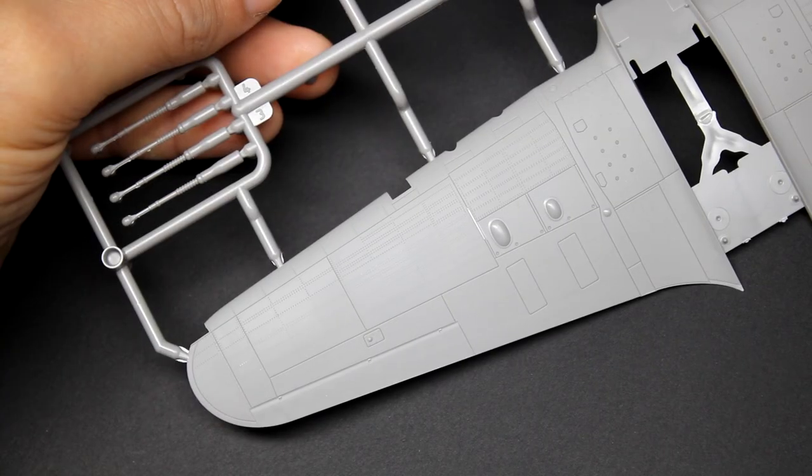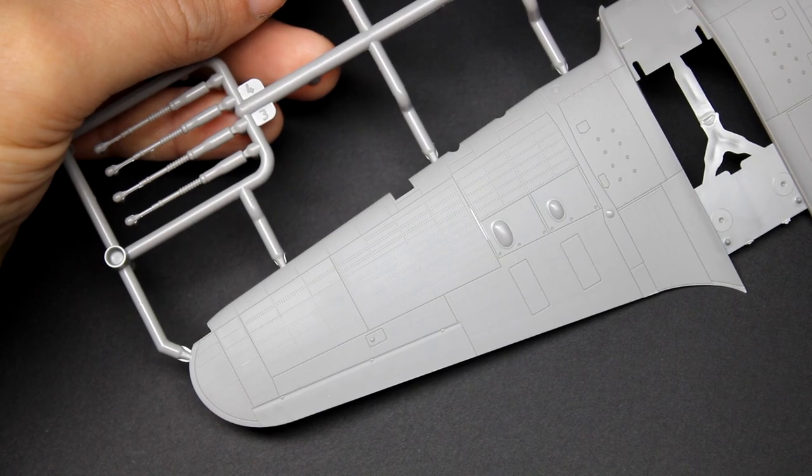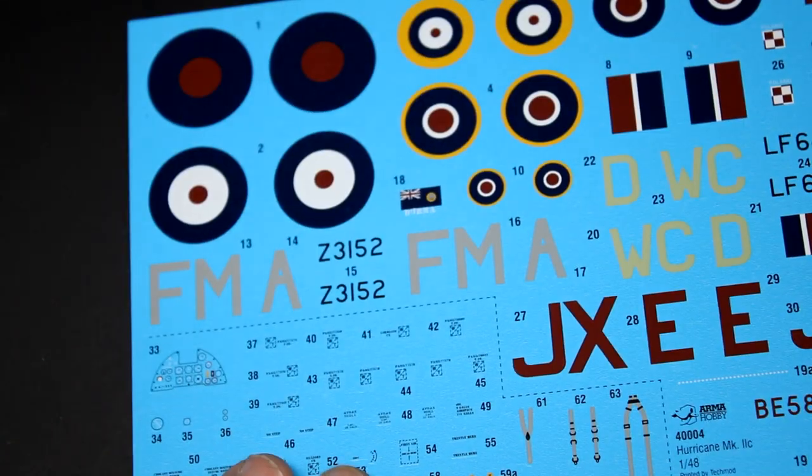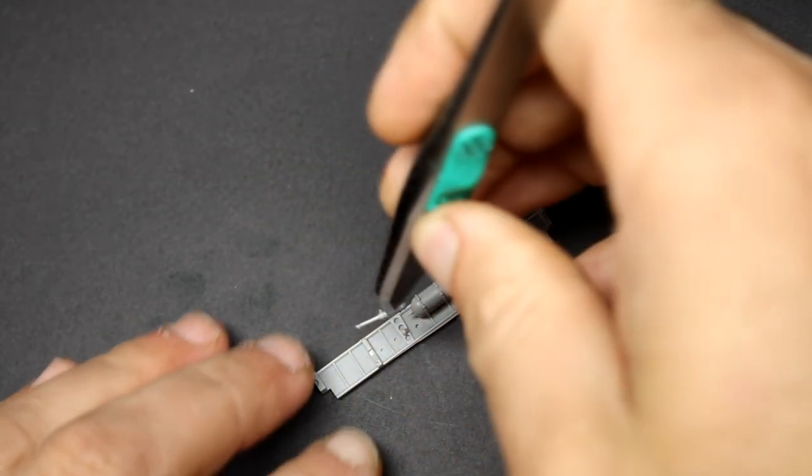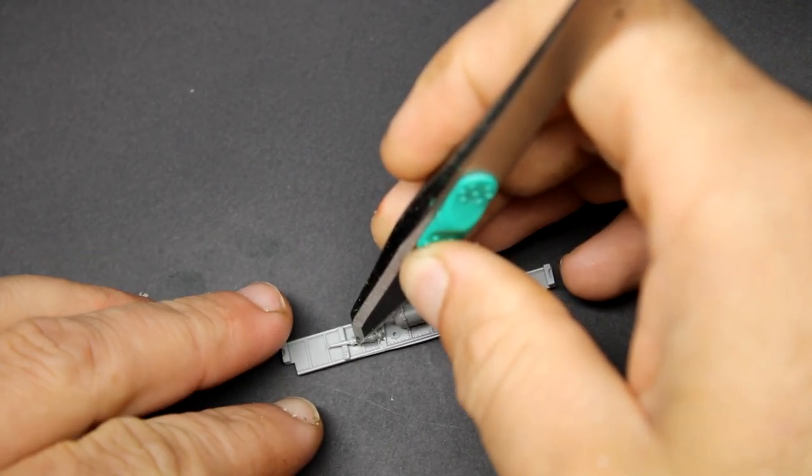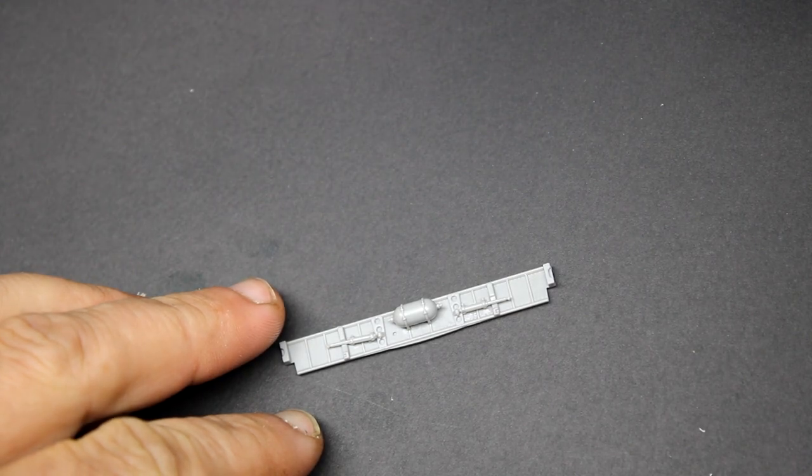On the sprues you can see a lot of detail, all the panel lines are nice and crisp, and the rivet detail is very, very fine. It has raised rivets as well in all the correct spots. Now in order to do a proper review of a kit, you have to build it because some kits look really nice in the box and then turn out to be complete gong shows when it's time to build them.